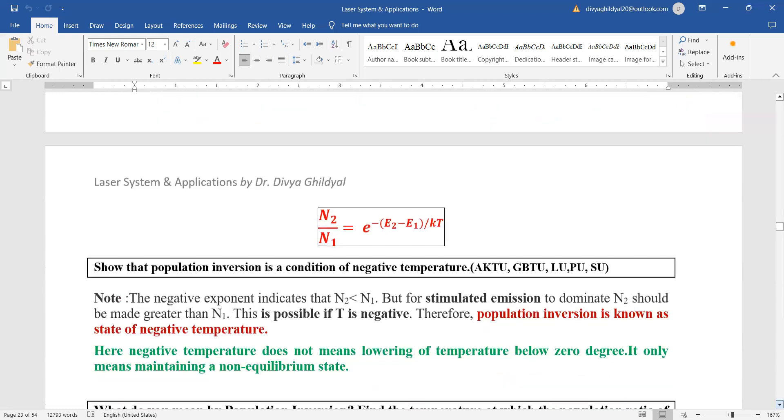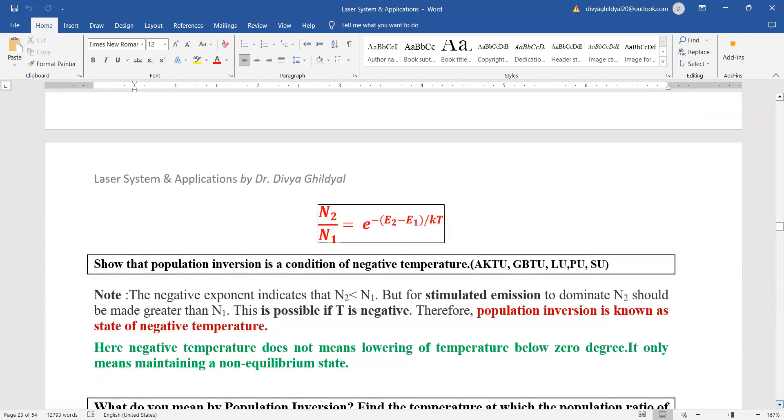Now the formula here is related to N2, that means number of atoms in the excited state divided by N1, number of atoms in the lower state equal to exponential to the power of minus E2 minus E1 divided by KT, where K is Boltzmann constant and T is temperature. A very famous question which is asked in section A of your question paper is,